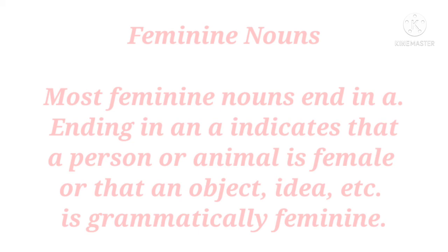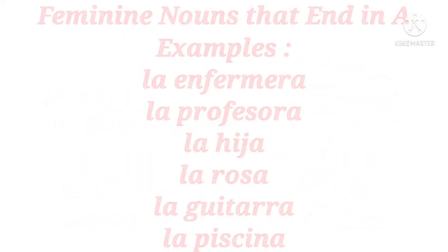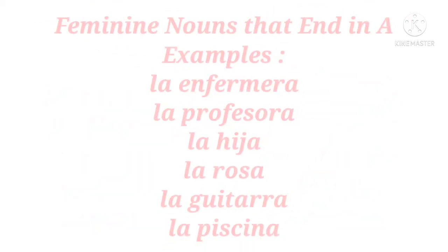Feminine nouns. Most feminine nouns end in A. Ending in A indicates that a person or animal is female, or that an object, idea, etc. is grammatically feminine. Feminine nouns that end in A: la enfermera, la profesora, la hija, la rosa, la guitarra, and la piscina.